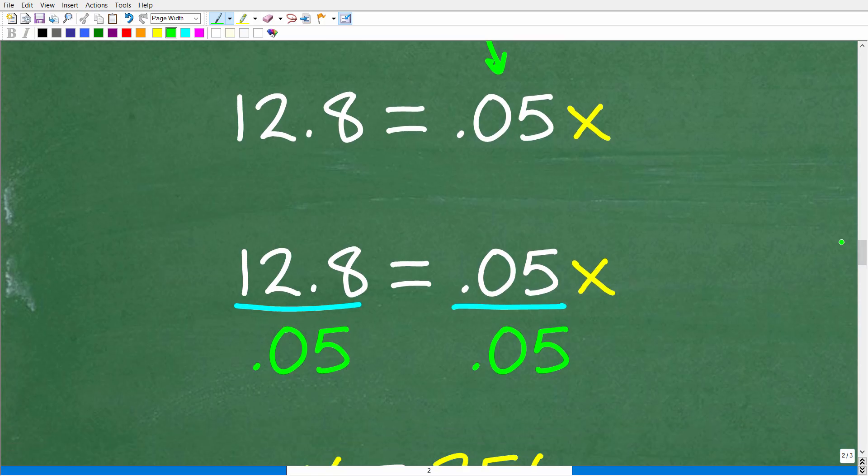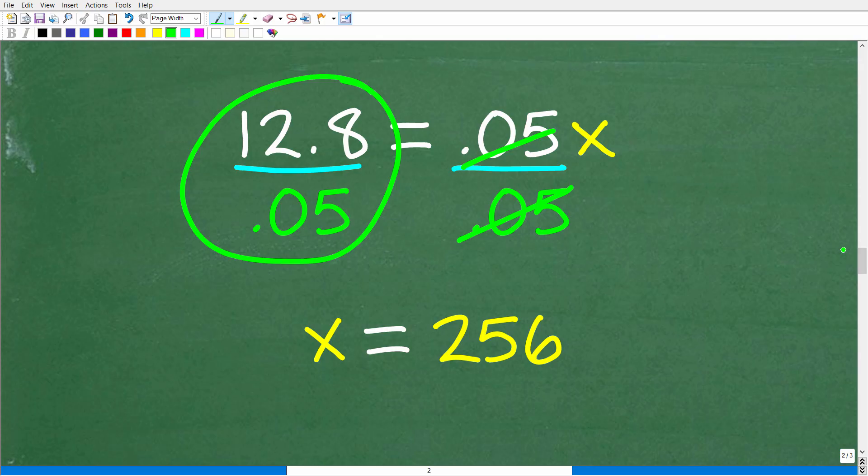Algebraically, 0.05 times x is the same thing as 0.05x. So now let's go ahead and focus on solving for x. So this is actually pretty easy. There's only one step to do here, and that is to divide both sides of the equation by 0.05. So let's go ahead and calculate 12.8 divided by 0.05 because 0.05 divided by 0.05 is 1x or x. So when we do that, 12.8 divided by 0.05 is going to be 256, which, of course, is our answer.